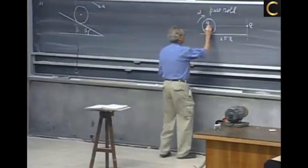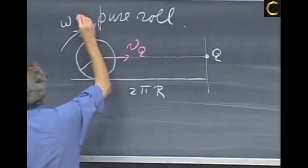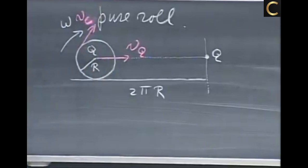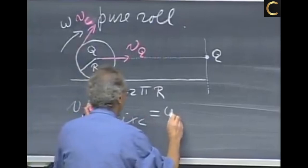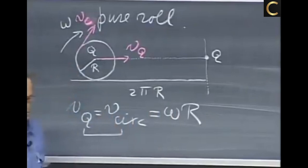When we have pure roll, the velocity of this point Q and the velocity of the circumference are the same. In other words, v_Q is then exactly the same as v circumference, and v circumference is always ωr. This part always holds, but for pure roll, this holds.